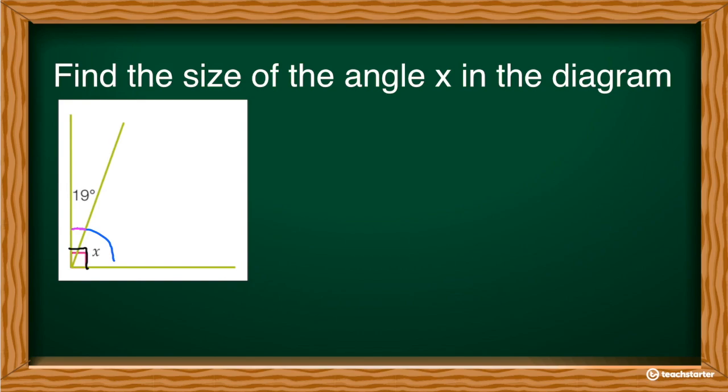So how do we do this complementary angles? Well, we can write, I like to do a little symbol like this for my teachers, so my teacher knows that I know what the complementary angles are. And then I just say, well, all together I have 90 degrees. And then I say, how much have I used up? I've used up 19. So I'm going to take away the 19 that I've already used.